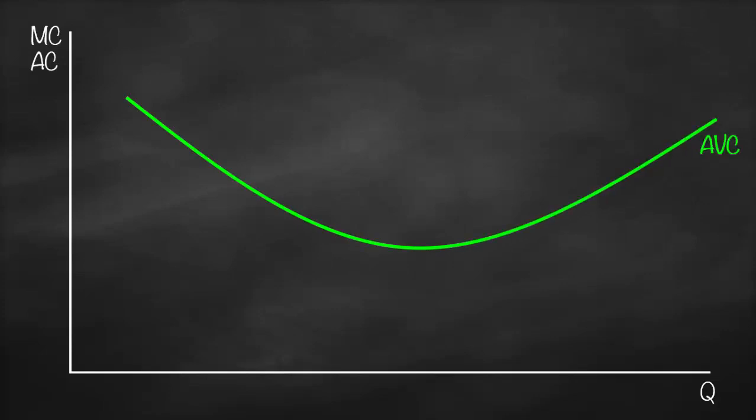This is our average variable cost, which is U-shaped, and this is our marginal cost, which has the Nike shape.